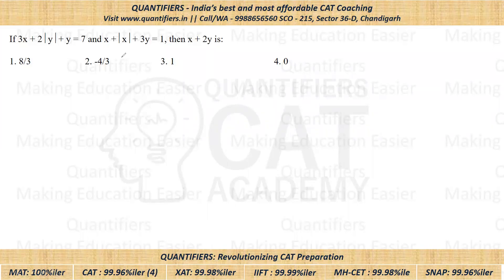It's better to start with the second equation because here we have X and we also have mod of X. Now this X and mod of X will get canceled out. I'm assuming that X is negative. So if X is less than zero, then mod of X will be equal to minus of X. So ultimately this equation will become three times Y is equal to one, which will give Y is equal to one by three.